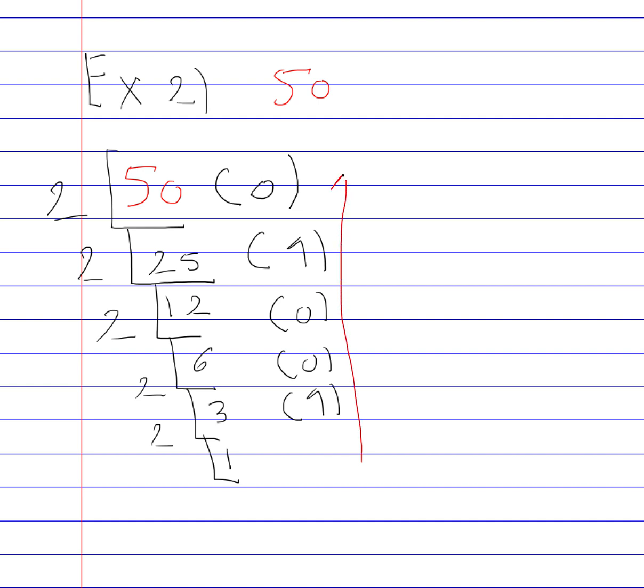So read it from the bottom. If we go ahead and we read it from the bottom, we're going to get 110010. So this right here is 50 as a decimal number converted into a binary number. And you read it from left to right as well, so it's 110010 and this is your answer if you express 50 as a binary.